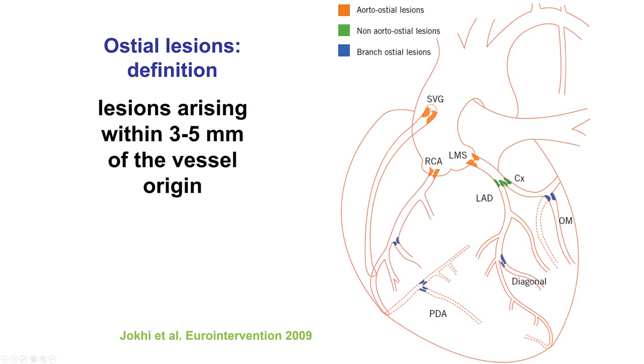Ostial lesions can be either aorto-ostial, at the origin of the coronary vessels or bypass grafts, or branch-ostial, such as LAD-diagonal bifurcations.